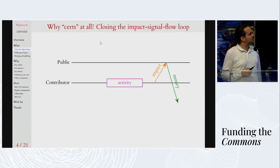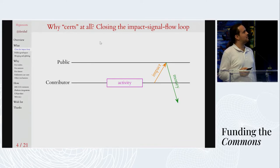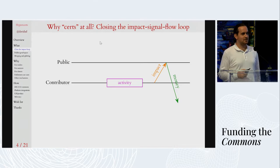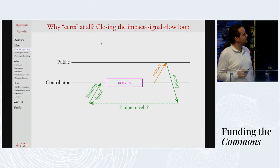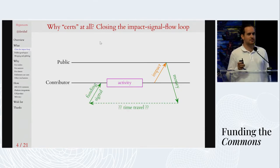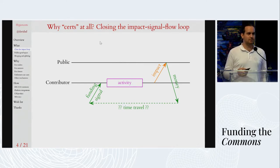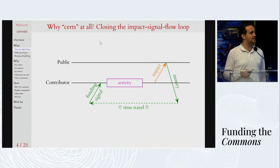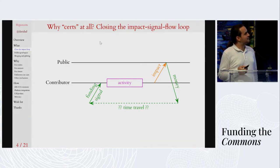But unfortunately, because it's a public good that was produced in the past by this point, there is no one to give the money to and nothing to exchange it for, so this transaction doesn't really seem feasible. What the funder really wants to do is to send the money back in time and retrocausally use it to fund that activity, making it more likely to have already taken place. But unfortunately, this seems physically infeasible.